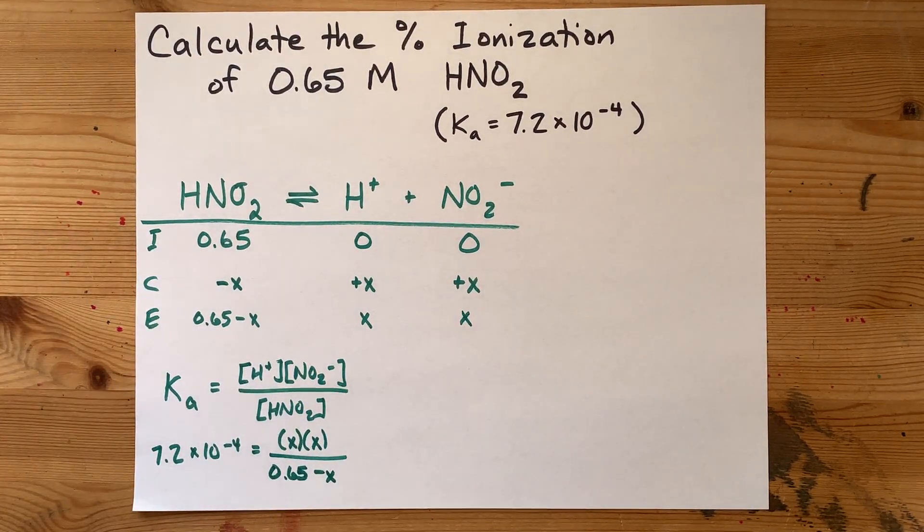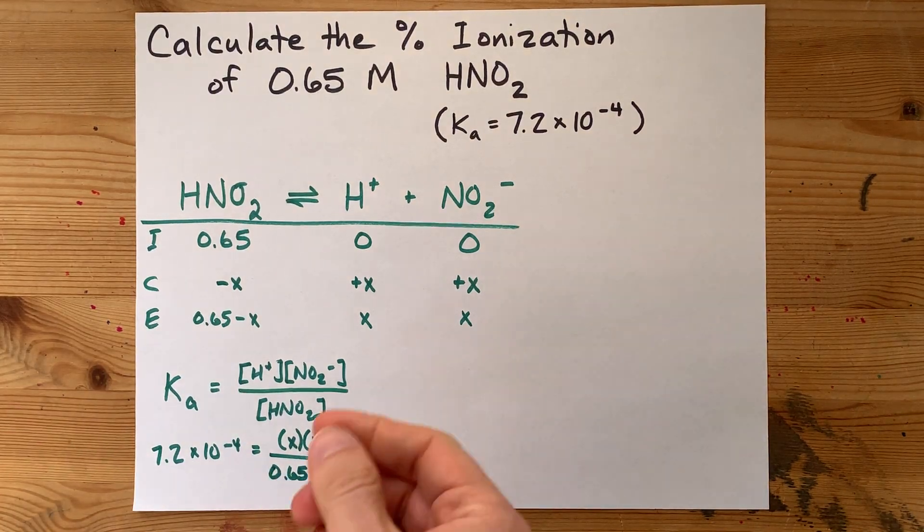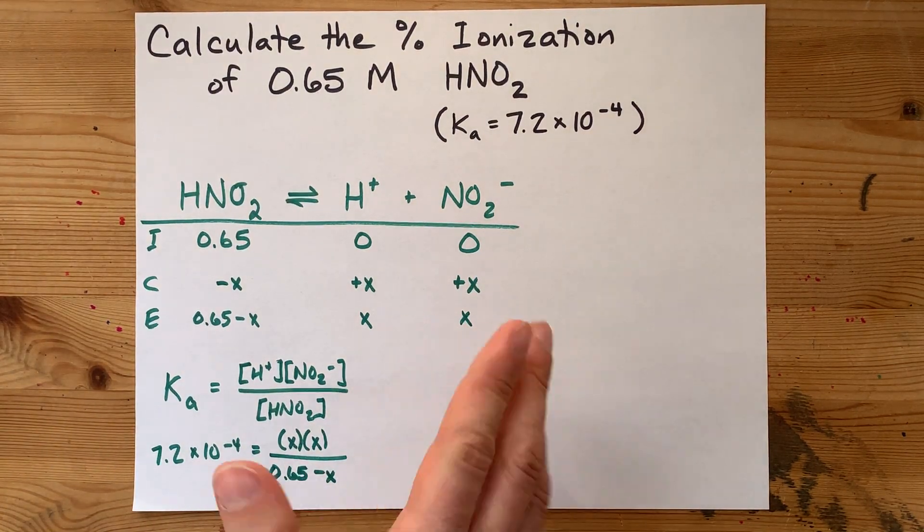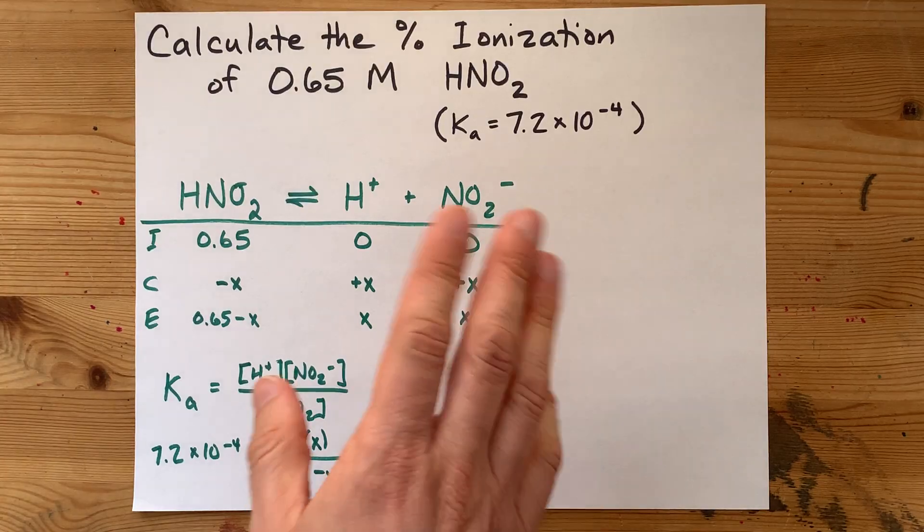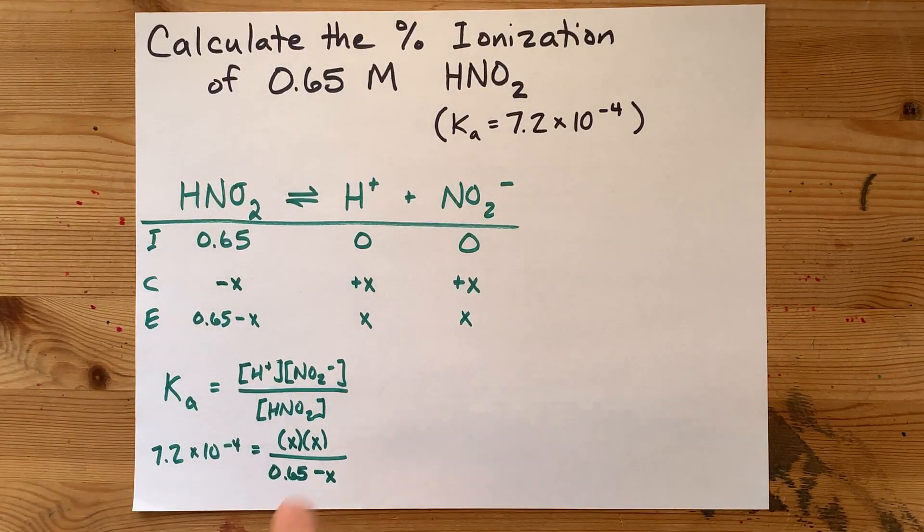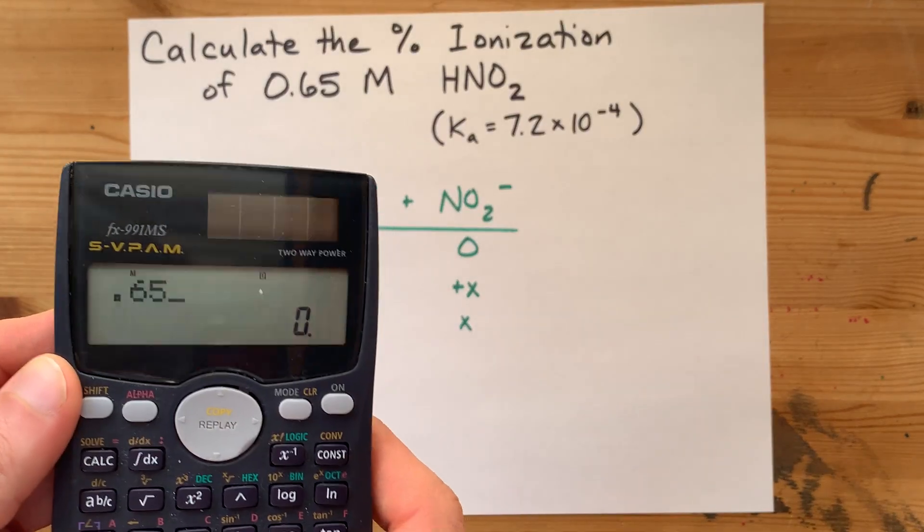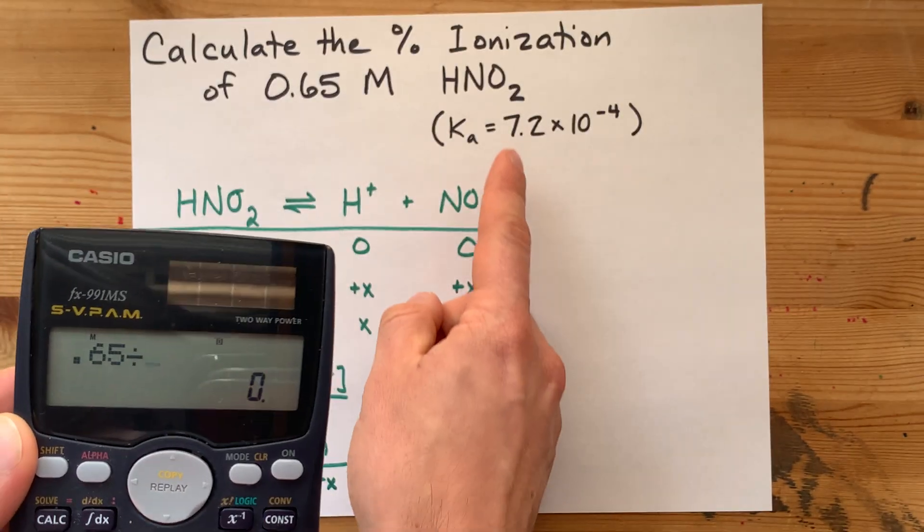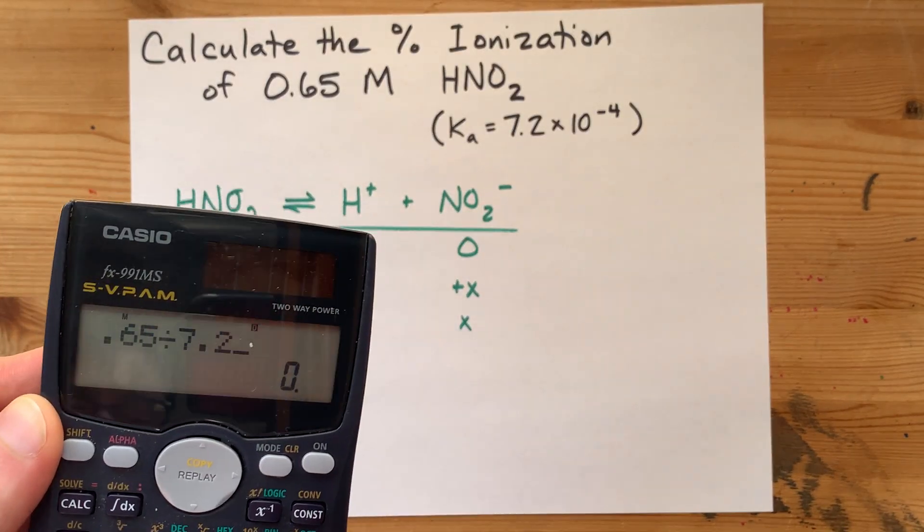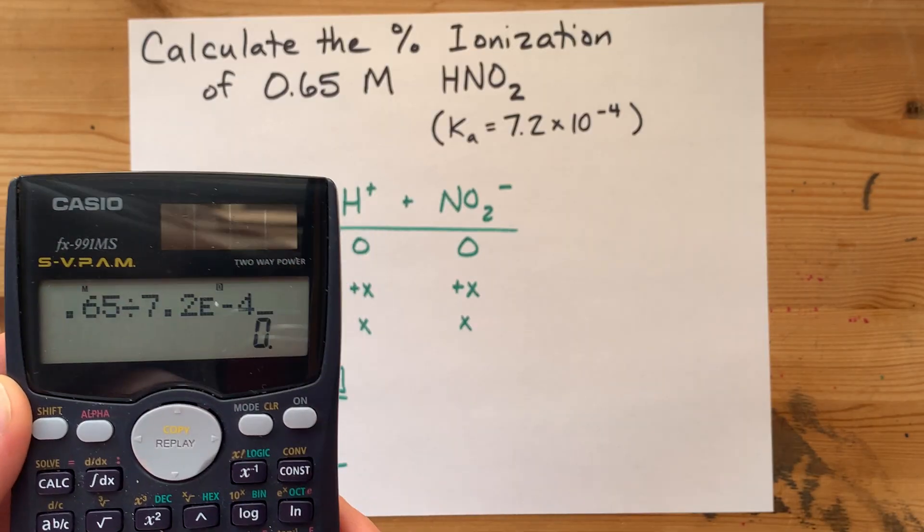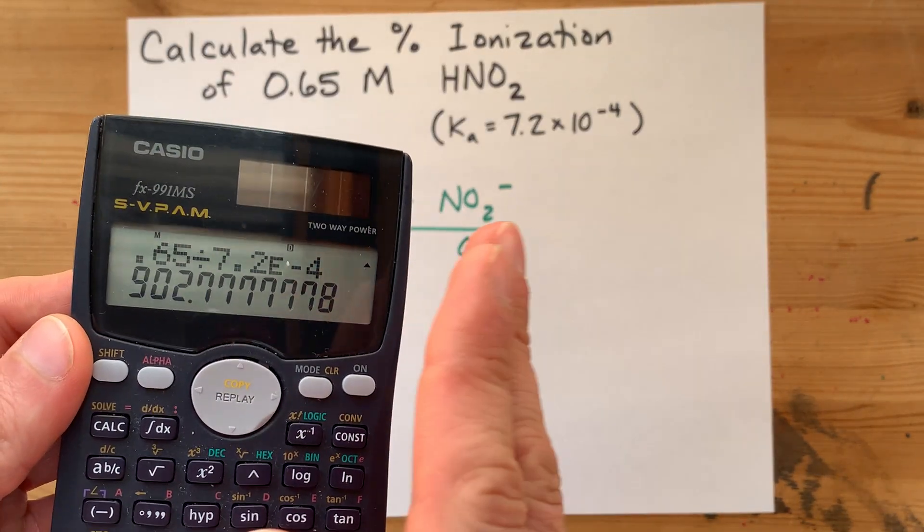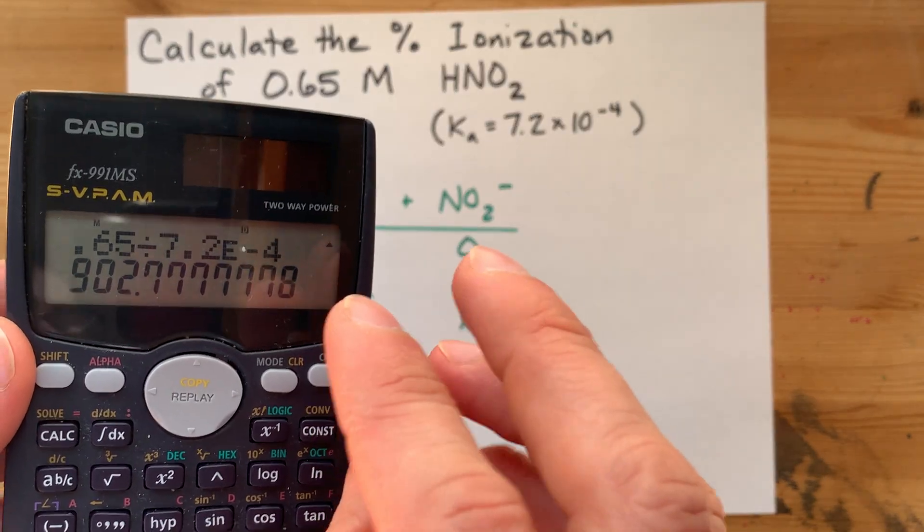Now, there is a shortcut here so you don't have to solve this as a quadratic equation. If you want to solve it as a quadratic equation, go ahead, be my guest. But if the concentration 0.65 divided by the Ka, 7.2 times 10 to the power of negative 4, happens to be more than, most teachers say, 100 or 500...